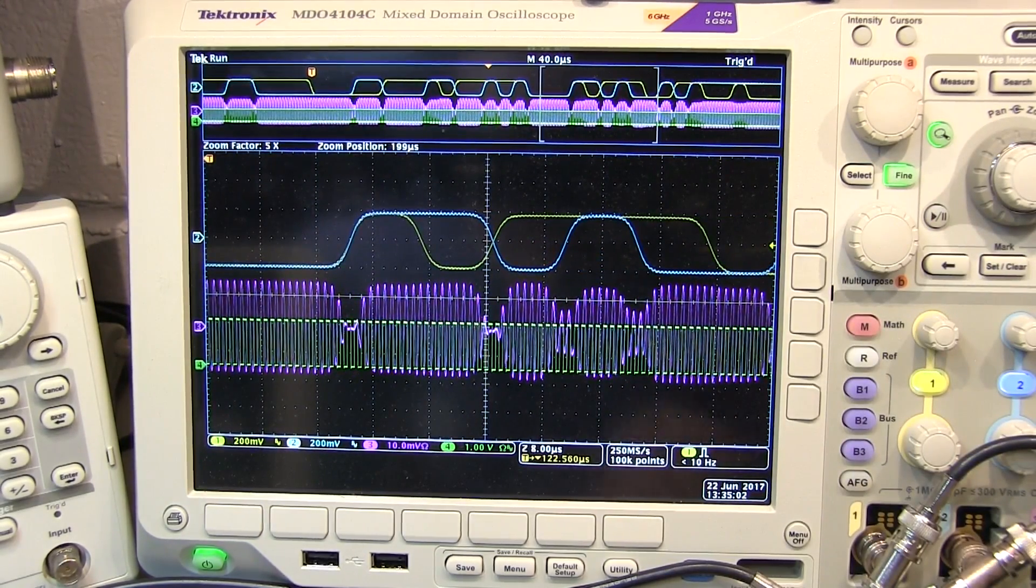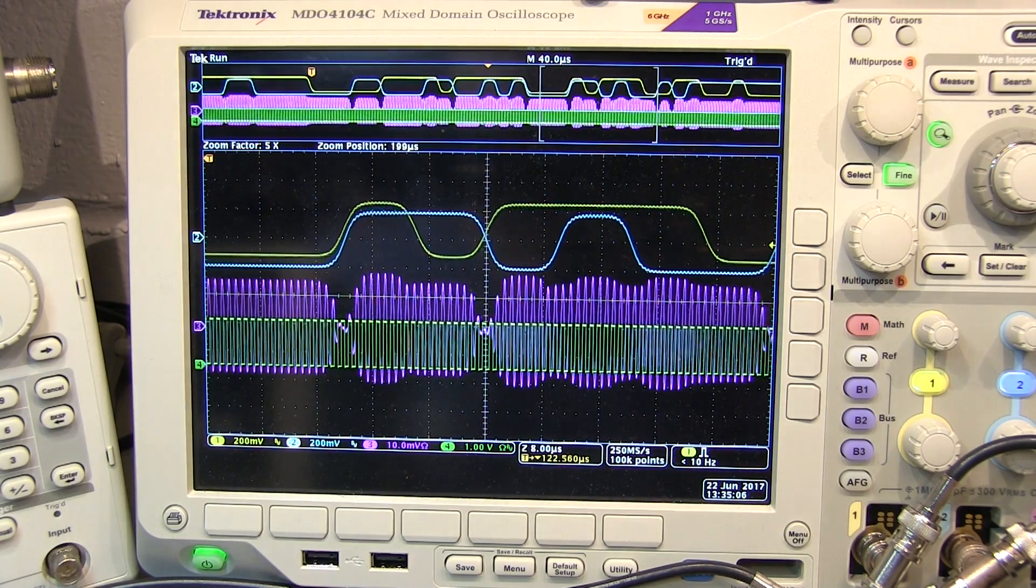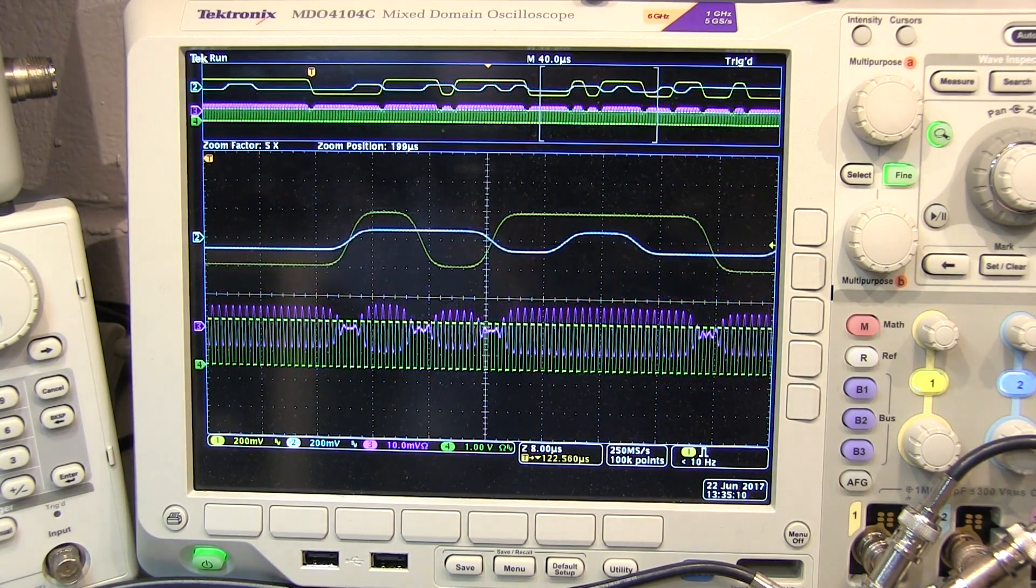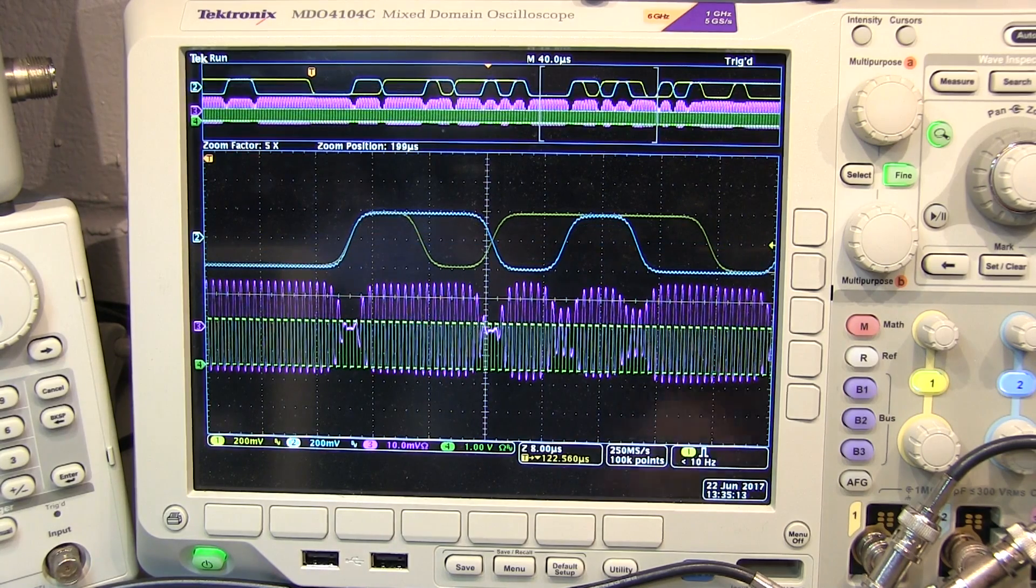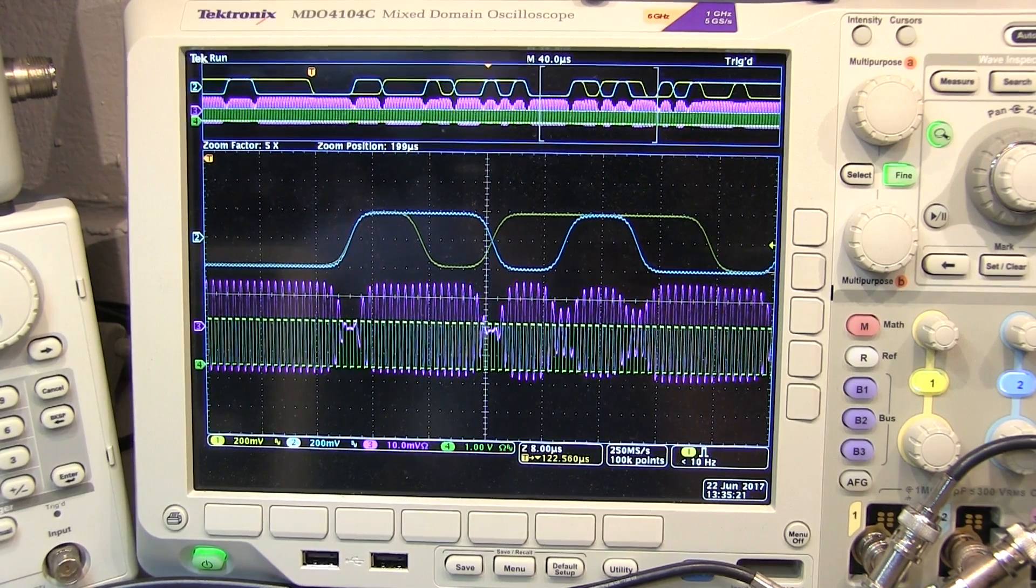Now in order to take a look at some of the effects of some impairments that can happen such as a DC offset between the I and the Q, or a gain offset between the I and the Q, or even a quadrature offset within the modulator, it is best to look at this in the modulation domain. So we are going to introduce the vector signal analyzer here and take a look at our signal with that.